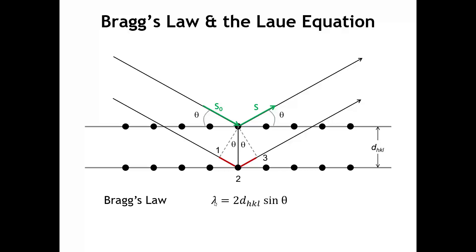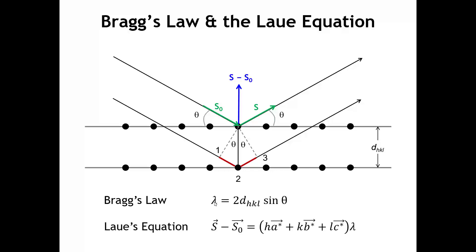What does this have to do with Laue's equations? Notice that the vector S minus S₀ is always going to be normal to these lattice planes. The vector S minus S₀ — the direction along which the beam is deflected — is a vector normal to the lattice planes. We also know from Laue's equations that S minus S₀, for constructive interference to occur, must equal the reciprocal space vector times the wavelength. But we've just derived that this reciprocal space vector is perpendicular to the lattice planes HKL. So the connections between Bragg's law and Laue's equations start to become clear.